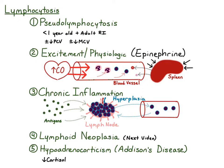Hypoadrenocorticism can also cause other ClinPath changes. On the CBC it can cause an eosinophilia, or an increased number of eosinophils, and there are lots of other chemistry and UA abnormalities you may see as well. The five causes of lymphocytosis are pseudolymphocytosis, excitement or physiologic lymphocytosis, chronic antigenic stimulation, lymphoid neoplasia, and hypoadrenocorticism.